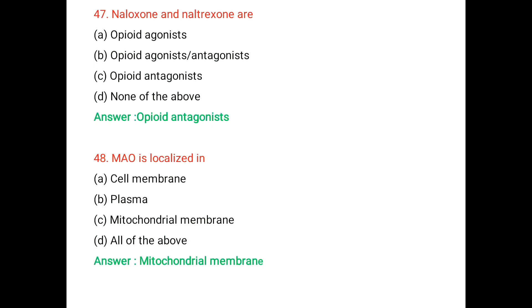Question number 48. MAO is localized in: A. Cell membrane, B. Plasma, C. Mitochondrial membrane, D. All of the above. The right answer is mitochondrial membrane. MAO means monoamine oxidase enzyme that are used to degradation of neurotransmitter which are located in the mitochondrial membrane.